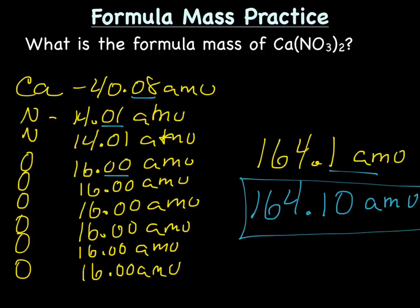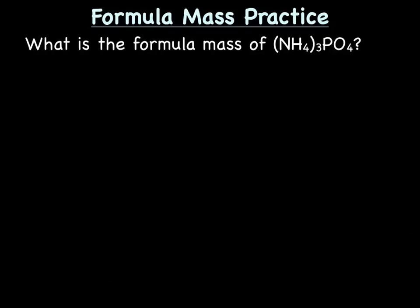With my final answer being 164.10 amu. So the formula mass of calcium nitrate is 164.10 amu. Let's try one more. What is the formula mass of (NH4)3PO4, or ammonium phosphate?